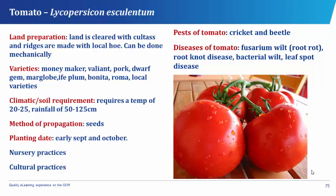Tomato has different varieties which include the money maker, the valiant, the pork, the dwarf gem, the maglobe, the Ife plum, the bonita, the roma, and local varieties. The climatic or soil requirement of tomato is a temperature of about 20 to 25 degrees centigrade and a rainfall of about 50 to 125 centimeters.